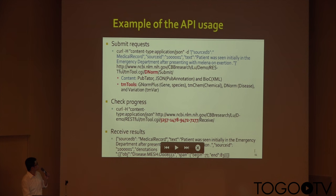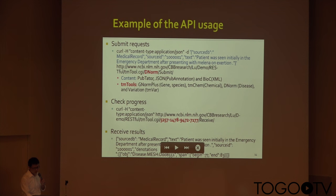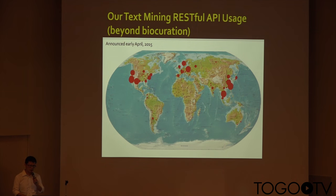Here is an example of how we can use simple instructions to get the results. The blue part is the text, which is in a JSON format, followed by an annotation request. The red part is the tool we want to use for recognition. Once we submit this request, we can get a session number. Then we can use that session number to check the progress. Once the progress is finished, you will get the results as shown below. Our RESTful API was just announced recently after approval, but until now we have had numerous users from around the world.